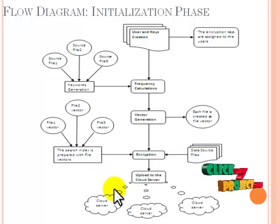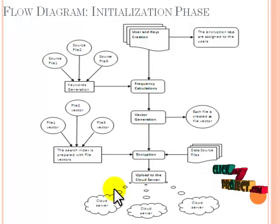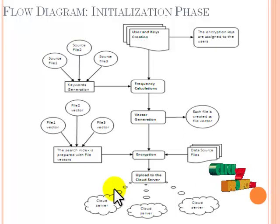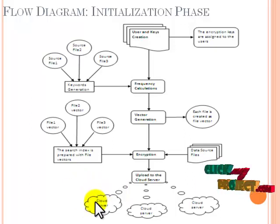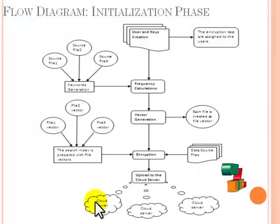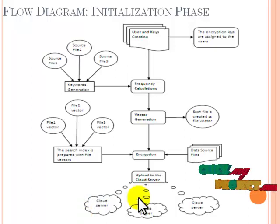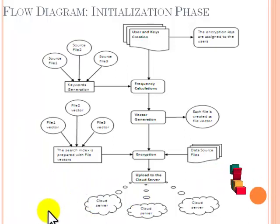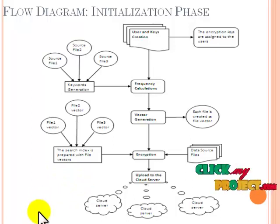The initialization phase consists of the processes of the data owner. First, the data owner creates the users who are going to access the data, and provides the data decryption keys to all authorized users. The data owner then calculates the term frequencies of each term. To provide accurate search results, the terms in the files are pre-processed.